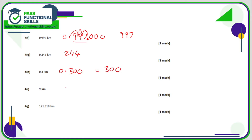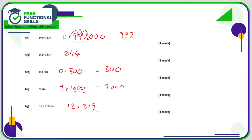0.3 is the same as 0.300, which is 300 meters. 9 kilometers — just multiply by 1000, add three zeros, giving 9000 meters. This one follows the pattern of the others: three decimal places, so pull out the decimal point and that is the conversion in meters.